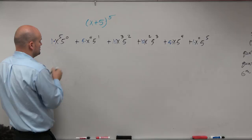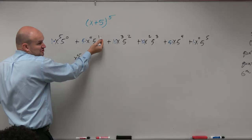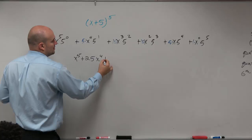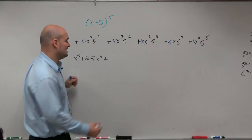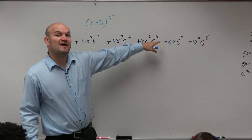5 to the 0 is 1, so therefore I can just rewrite this as x to the fifth. This becomes 5 to the first is really 5, but 5 times 5 is 25x to the fourth, plus here I have x cubed, this is 5 squared. 5 squared times 10 is 250x cubed.